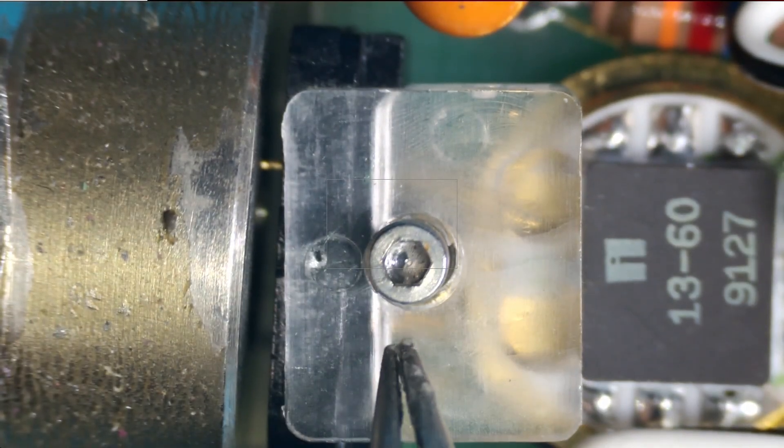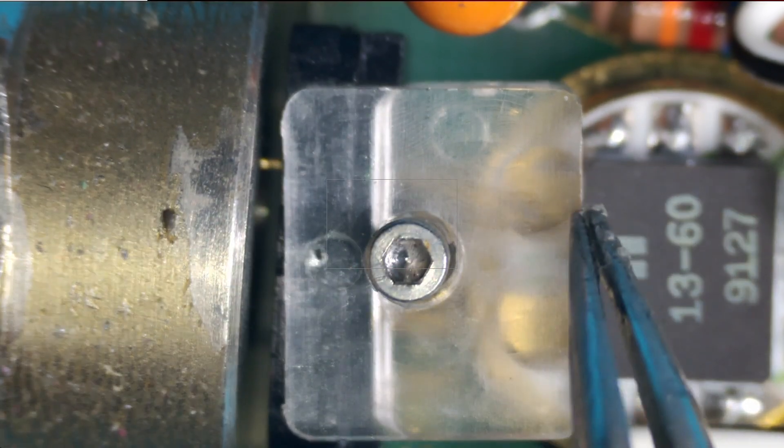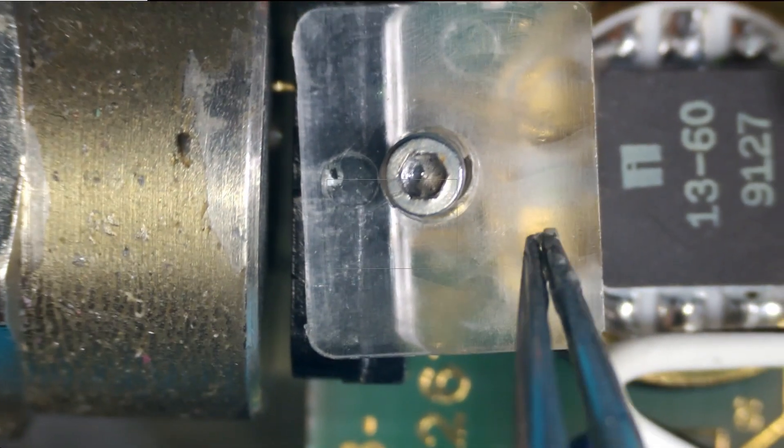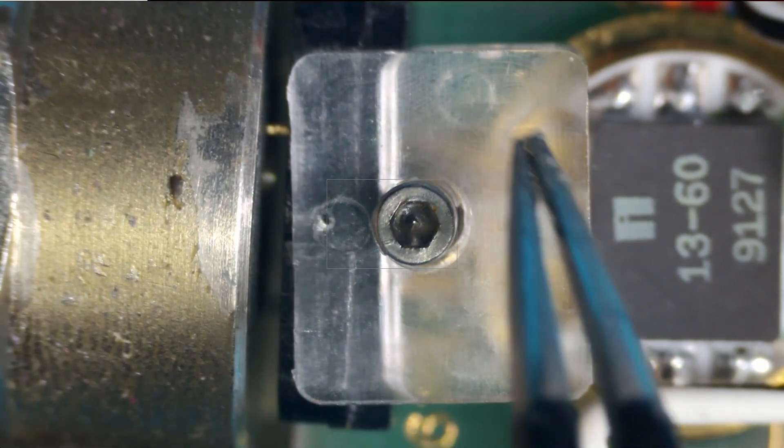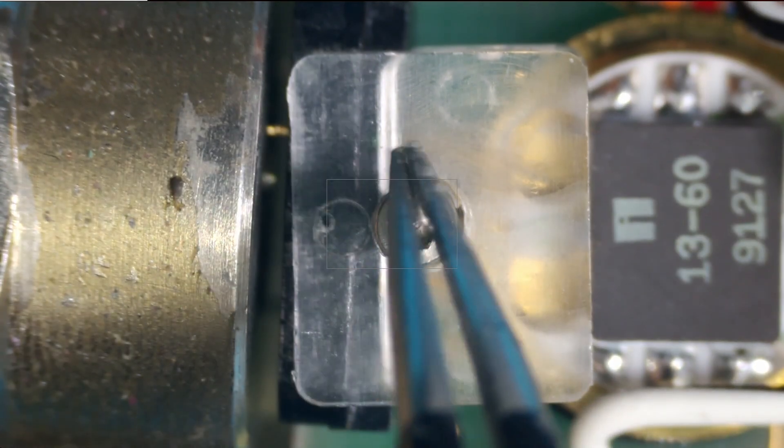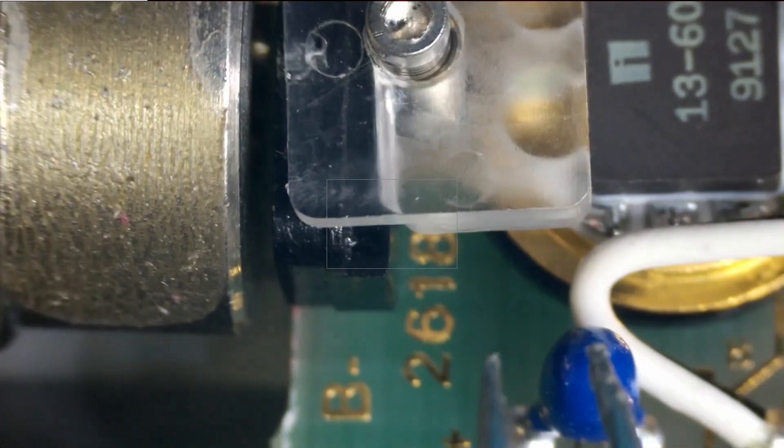We don't solder to it—that would introduce thermocouple effects. Instead, we use this plastic cover to press the gold wires directly onto these two gold pads. You can just see the first gold wire under the plastic, but I can't see the second at all. It seems to be missing.